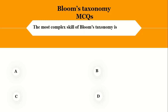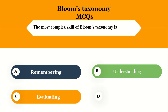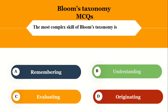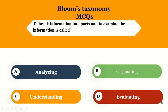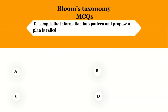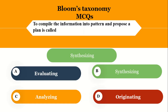The most complex skill of Bloom's taxonomy overall: is it remembering, understanding, evaluating, or originating? The right answer is originating. To break information into parts and to examine the information is called analyzing. To compile the information into a pattern and propose a plan is called synthesizing.